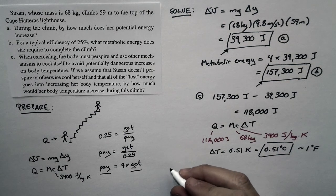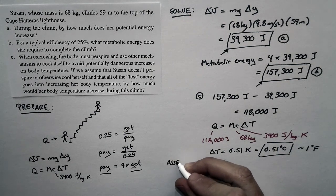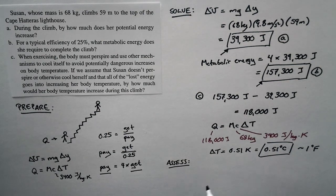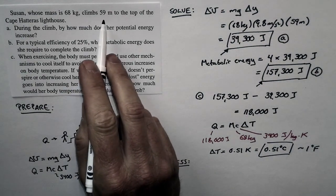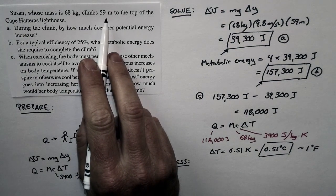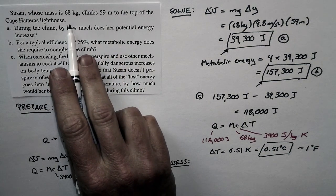Now let's assess this result. Think about this. If you climbed 59 meters, 59 meters is like 200 feet. If you climbed all the way to the top of this lighthouse, you would be sweating.